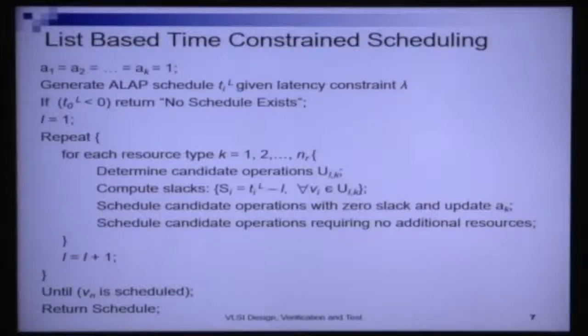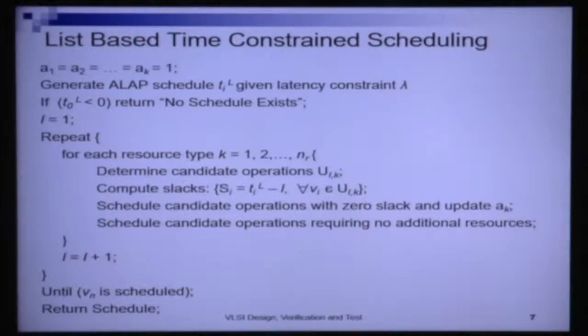The first heuristic solution strategy is a list-based strategy. When we talked about list-based scheduling in the resource constraint scheduling problem, we said that the basic strategy is this: we progress time step by time step. In each time step, there are a set of ready-to-schedule operations, and these operations have a defined priority on them. For each type of resource, we schedule the highest priority operations of each type. This was the basic principle of resource constraint scheduling, and the same principle will be followed here.